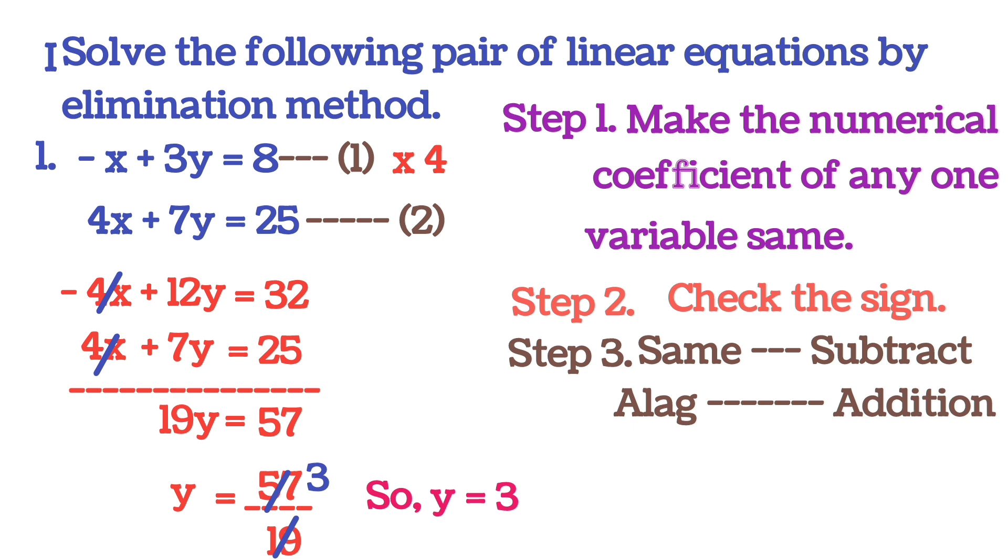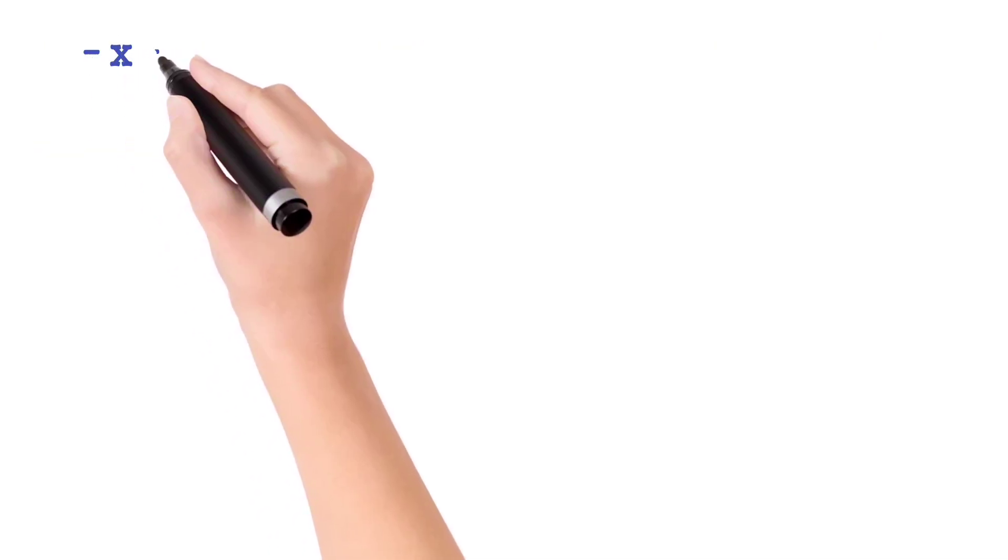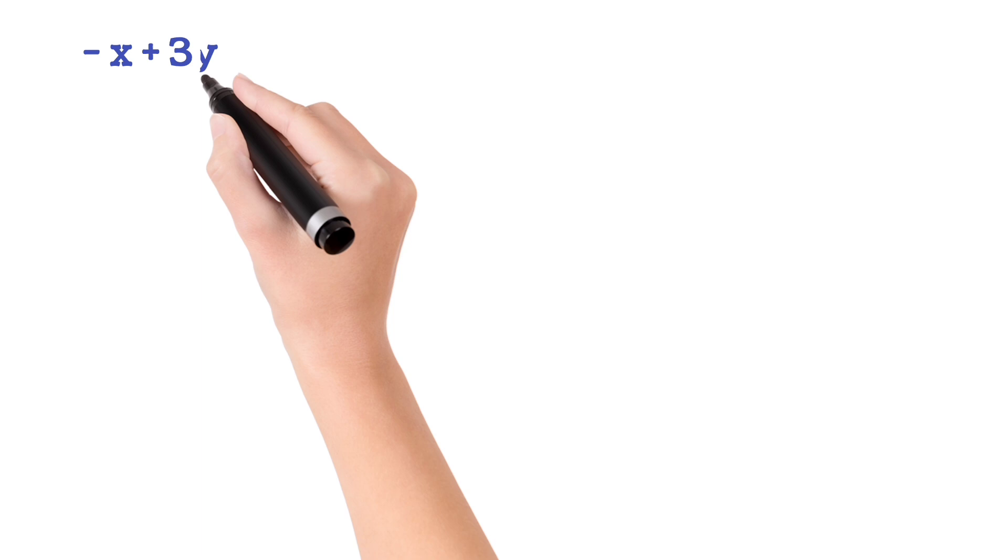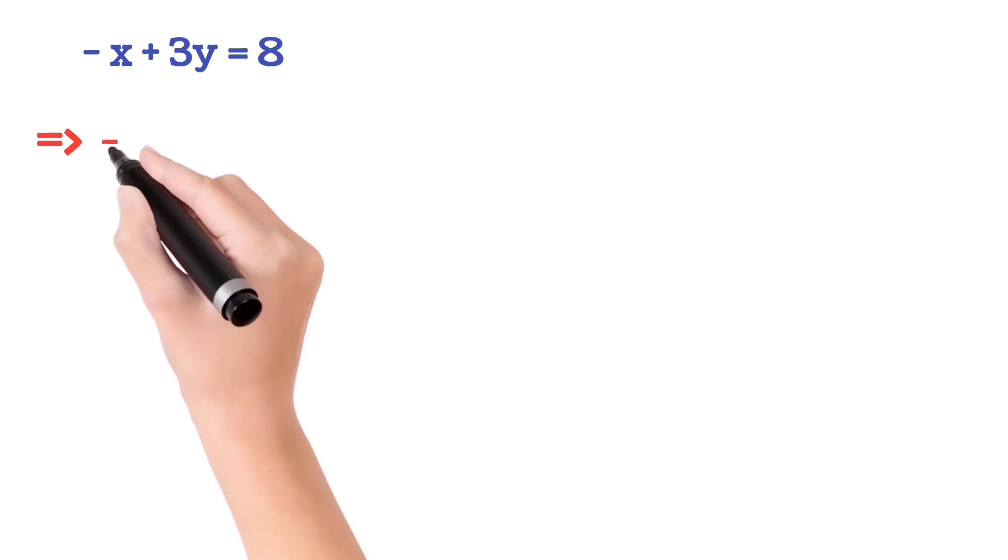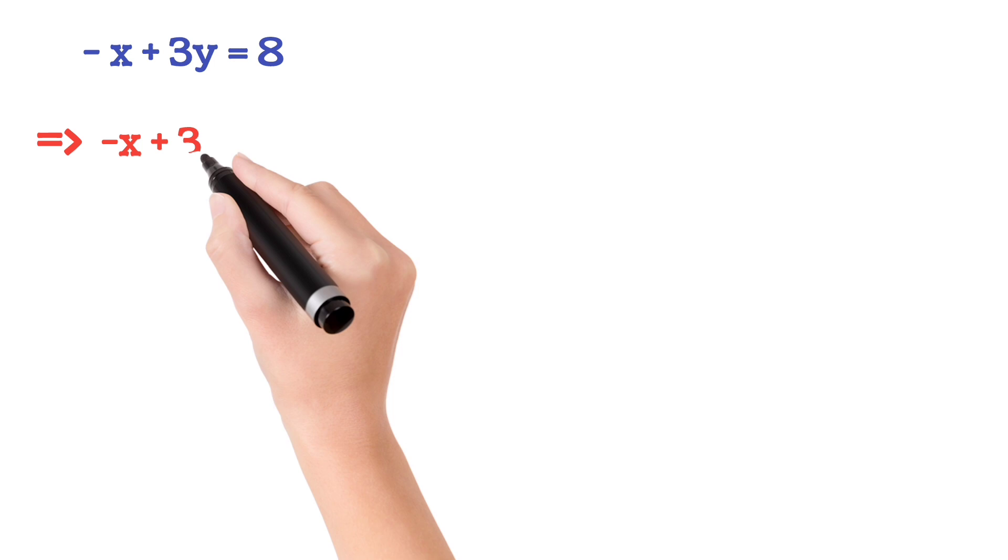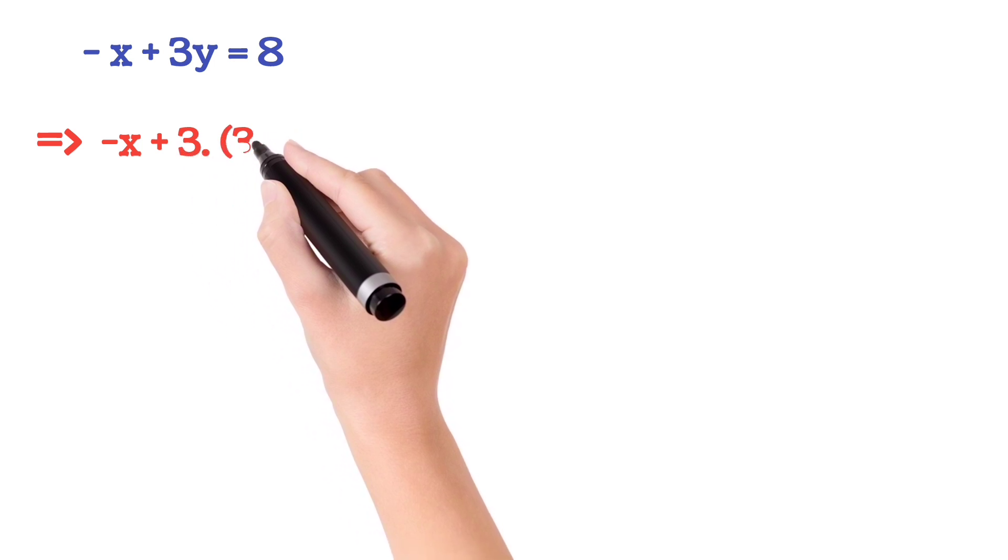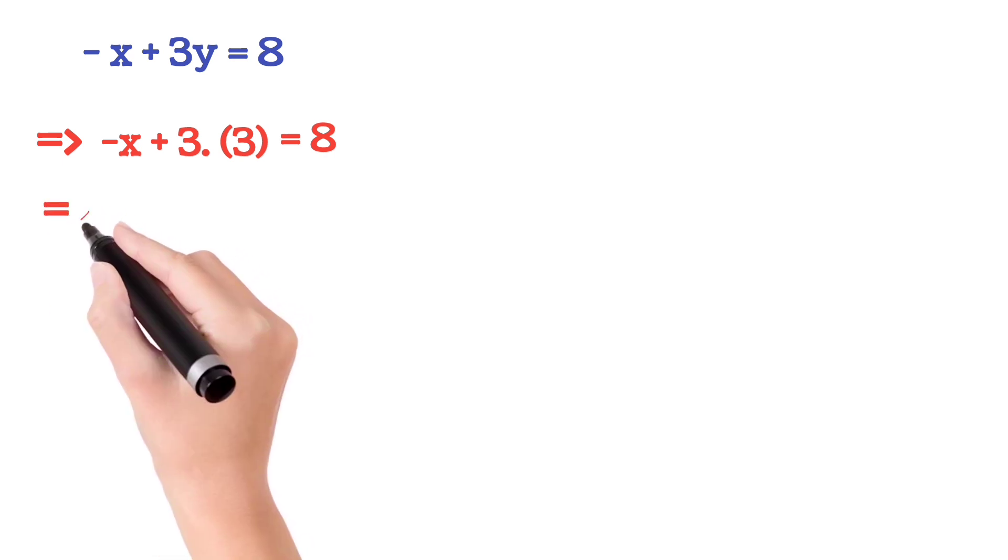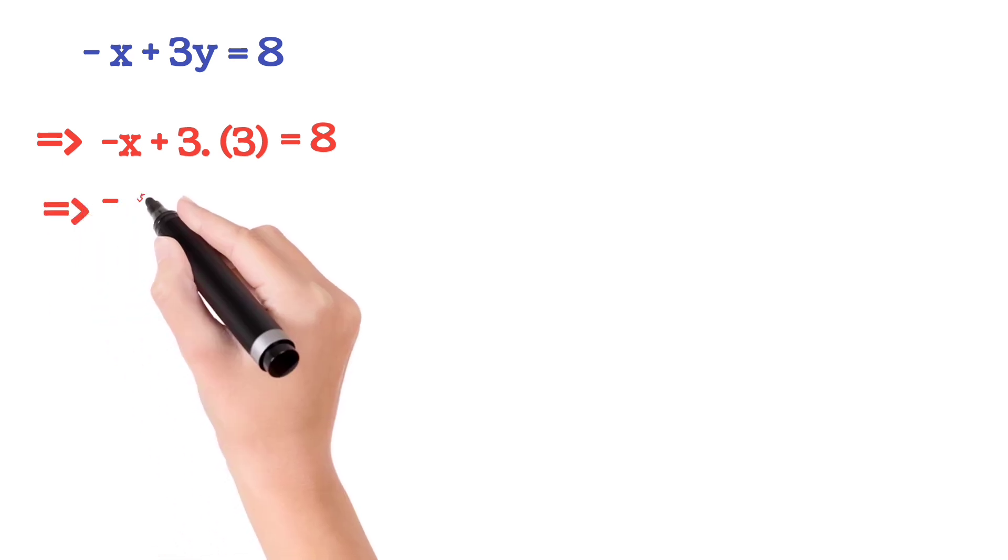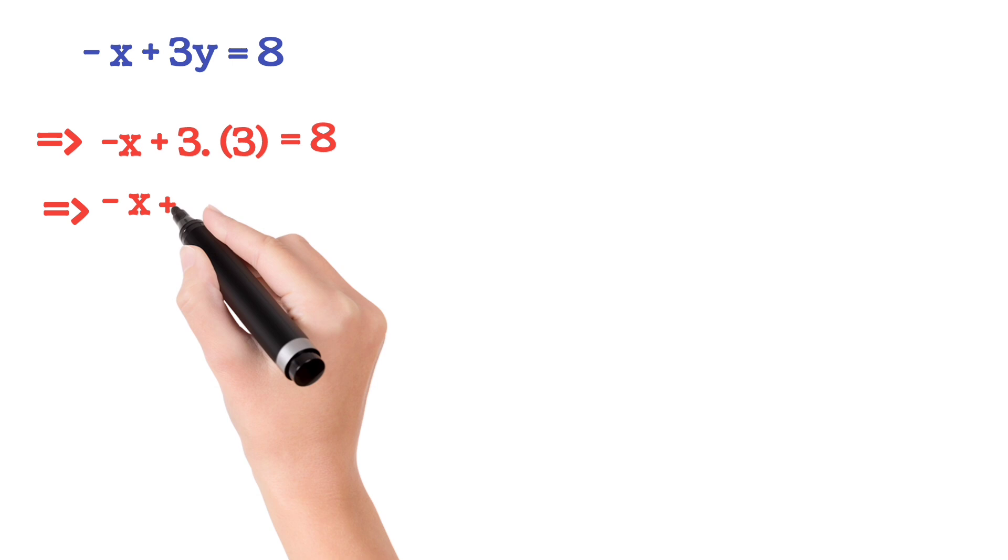So our first equation is -x + 3y = 8. Here we will put the value of y. We know the value of y is 3, so we will put here. So next step, that implies -x + 3 × 3 equals to 8. We are finding by the substitution method.